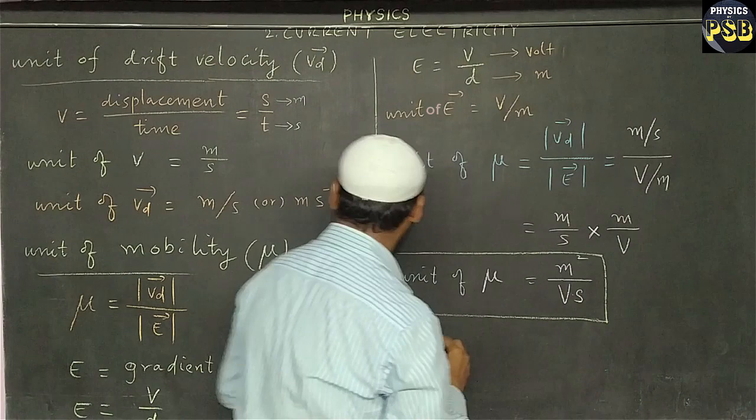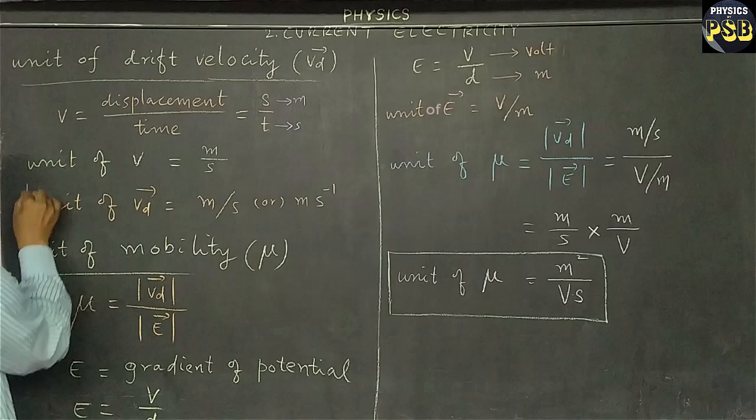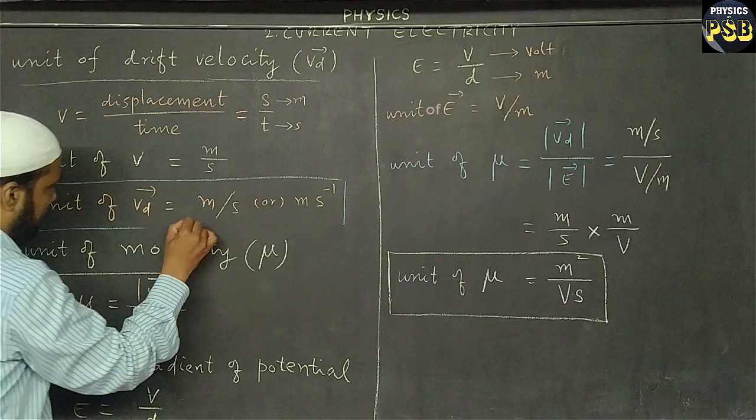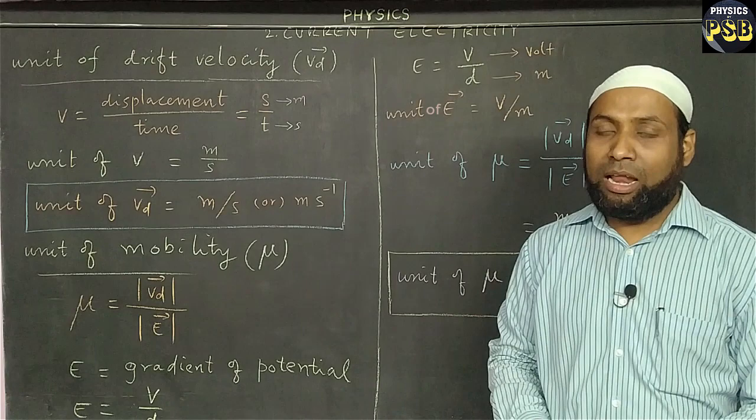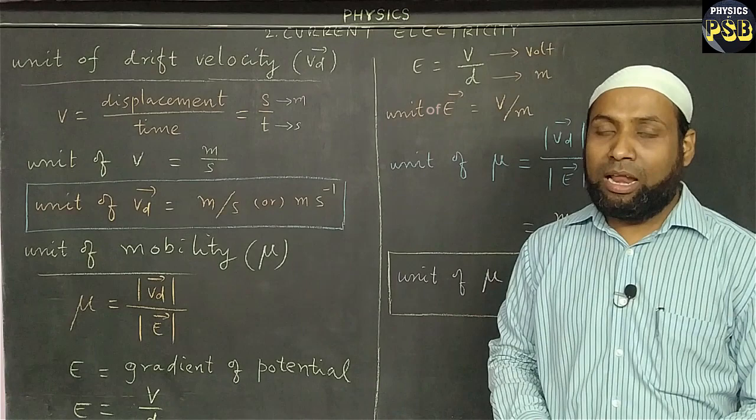I'll box this result for better visibility. The unit of drift velocity is meter per second, and the unit of mobility is m²V⁻¹s⁻¹. These two units are usually asked in multiple choice questions. I hope this video is useful — if you have any doubt related to the topic, please put a question in the comment section. Thanks so much!